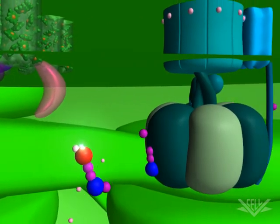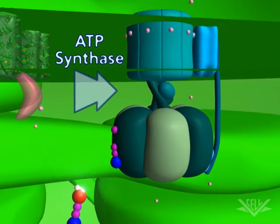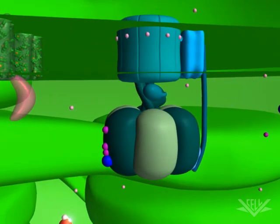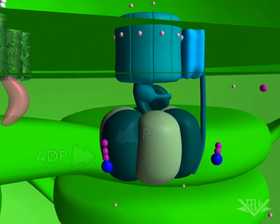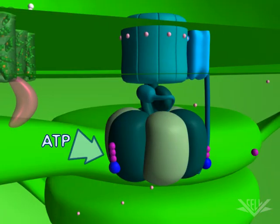The gradient created by the electron transport chain is utilized by ATP synthase to create ATP from ADP and PI. This is similar to the way ATP is synthesized in the mitochondria.